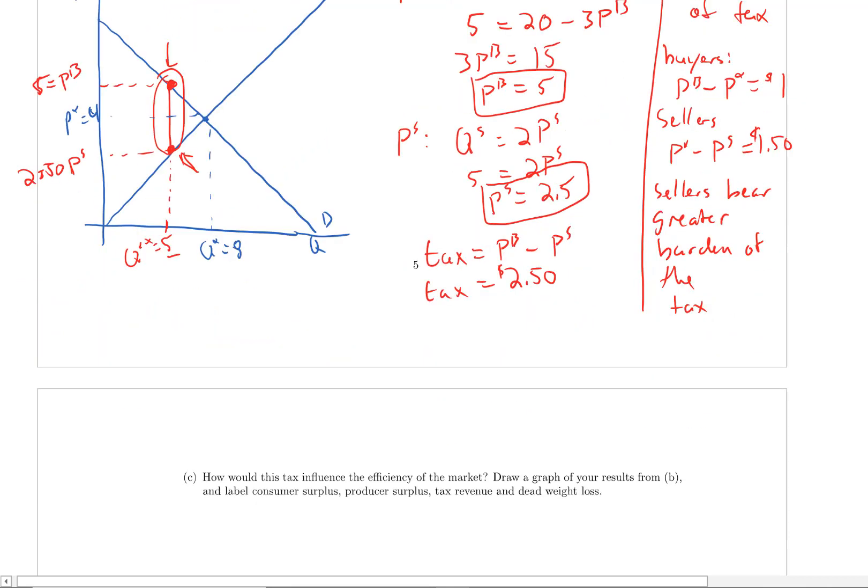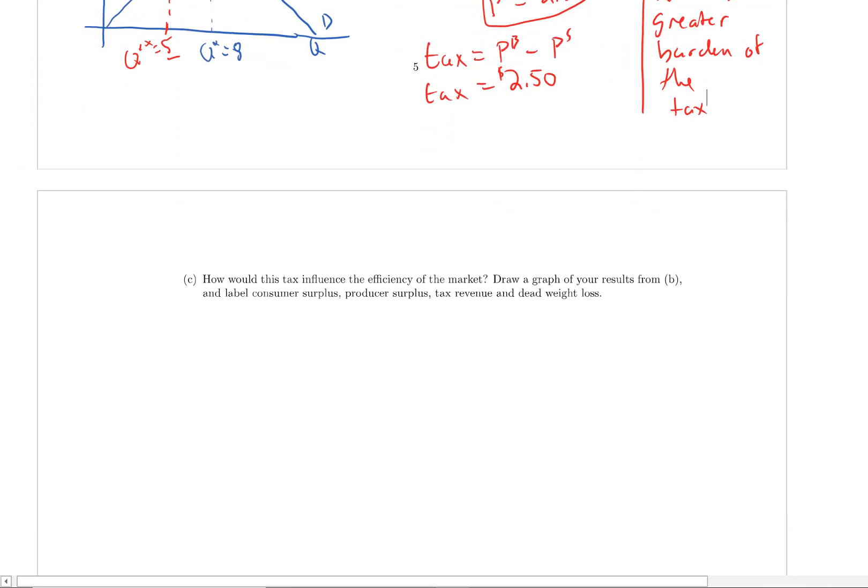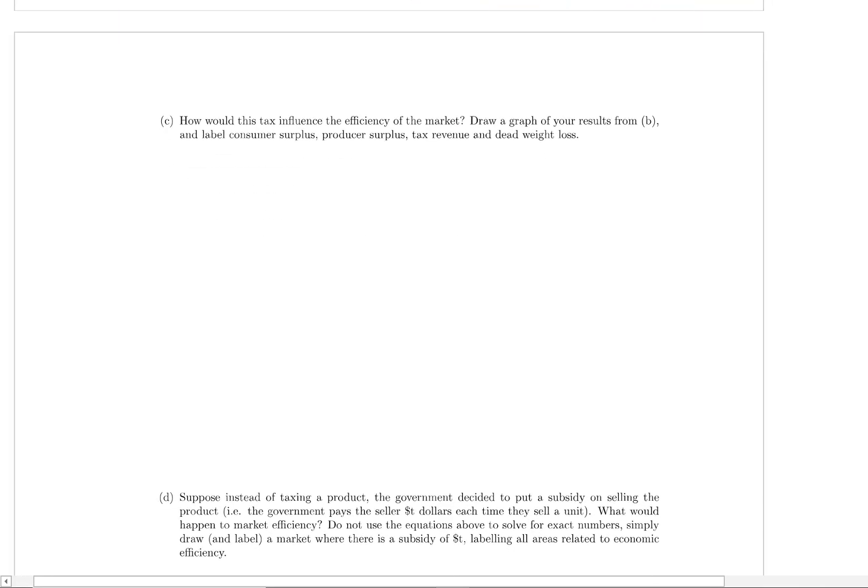All right. Let's move on to part C. So scrolling down. How would this tax influence the efficiency of the market? Draw a graph of your results from B and label consumer surplus, producer surplus, tax revenue, and deadweight loss. Okay. So let's just redraw this.